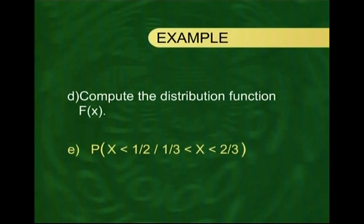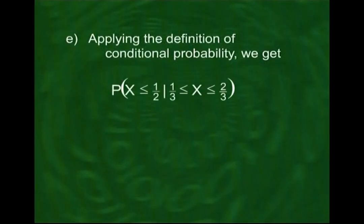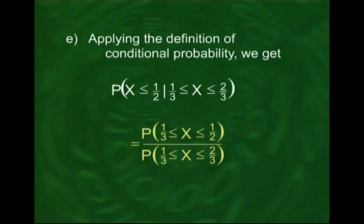We will apply the same definition that we used when we dealt with this concept in the very beginning. As you will recall, the probability that B occurs given that A has already occurred is equal to the probability that both A and B occur, divided by the probability that A occurs. In this problem, B is x ≤ 1/2 and A is that x lies between 1/3 and 2/3.